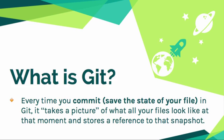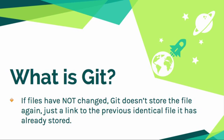So every time you commit, which is saving the state of your file in Git, it takes a picture of what your files look like at that moment and then stores a reference to that snapshot. When the files have not changed, it doesn't store the file again — it just links it back to the identical file that it already stored. So it's nice in that sense too. You don't have a bunch of the same exact files duplicated, which is great.